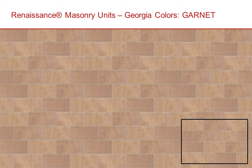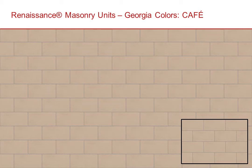For Renaissance textures, a three unit by four unit section is used so that color ranges can be shown accurately. For consistency, even monotone colors use the same three by four section for their texture maps.